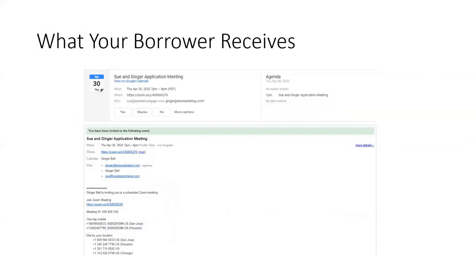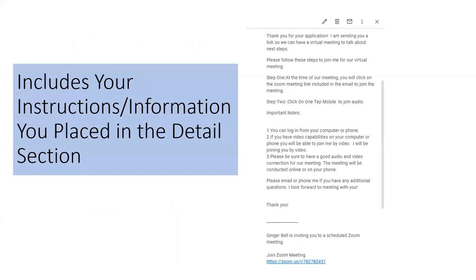This is what your borrower receives — a calendar invite at the date and time you requested. They can accept, maybe, or decline, so you'll know if they plan on being there. It will have your title information so they see what it's about, a Join Meeting button, and your instructions with the information you placed in the detail section. It provides them with additional information, and since it's based on the template you already wrote, it becomes copy and paste — very simple.